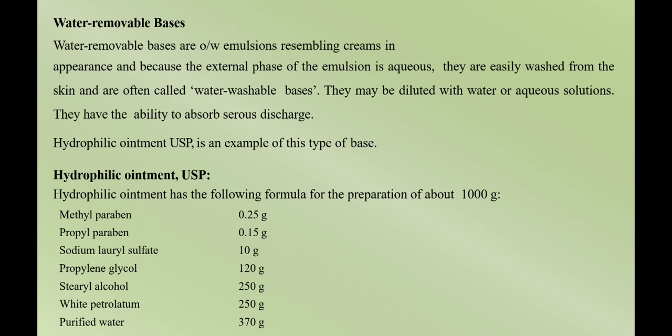Water-removable bases are oil-in-water type emulsions. Because the external phase of the emulsion is aqueous, the water content is more and the oil is less. So they are easily washed off from the skin. They can be diluted with water and aqueous solutions, and they have the ability to absorb serous discharge. Hydrophilic ointment USP is an example of this type of base.